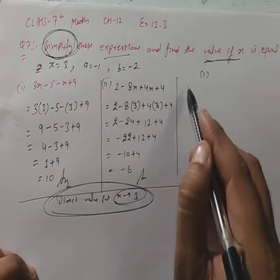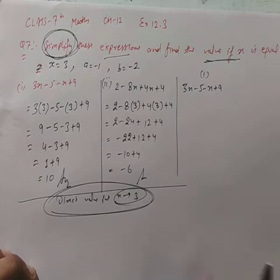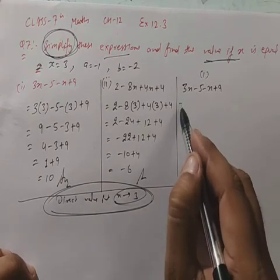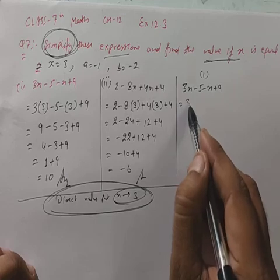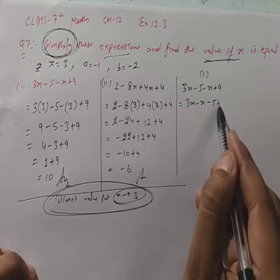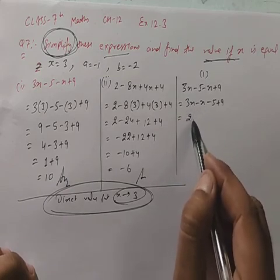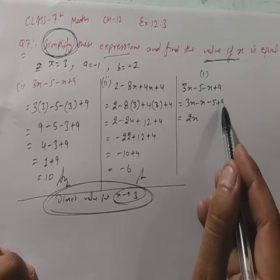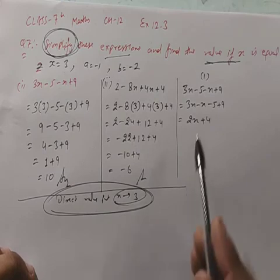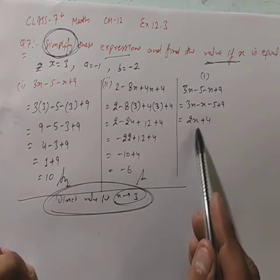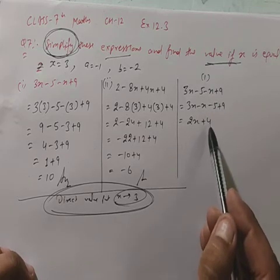First part को दुबारा करेंगे: 3x minus 5 minus x plus 9. पहले simplify करो — like terms देखो: 3x minus x = 2x, और minus 5 plus 9 = plus 4. तो simplified expression हो गया 2x plus 4.